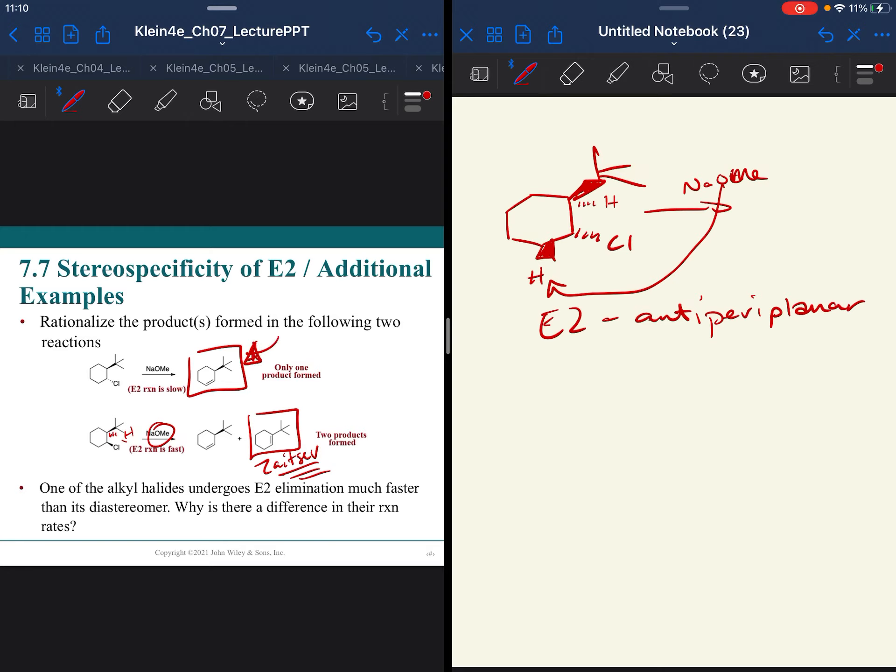But this is a very specific example of the one time your rules for Zaitsev and Hofmann don't really work out. So my tip to you is to do a lot of practice and to really pay attention when wedges and dashes are given to you.